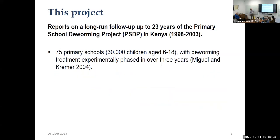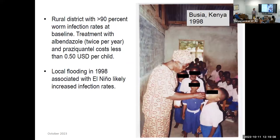What I'll talk about today is a long-run follow-up of a mass deworming program designed to follow WHO mass treatment recommendations that started in Kenya in 1998. We worked in 75 primary schools, each with about 400 kids — around 30,000 kids in the baseline sample. Primary schools in Kenya at that time went from pre-K up to grade 8, a pretty wide age range. What was novel was that treatment was phased in experimentally, in one of the first experiments in development economics. The public health nurse photo here shows the setting — the pills are cheap and you only need to take them once or twice a year to kill the worms, making it very cost effective at about 50 cents per child per year.